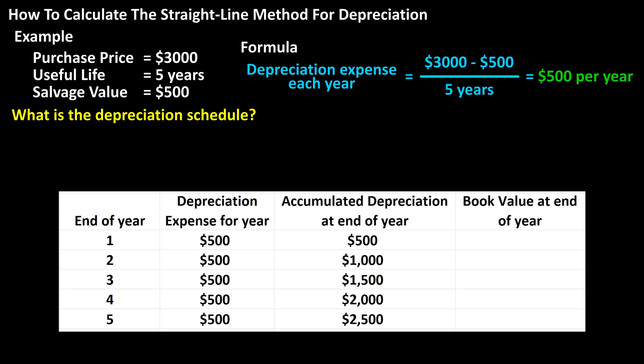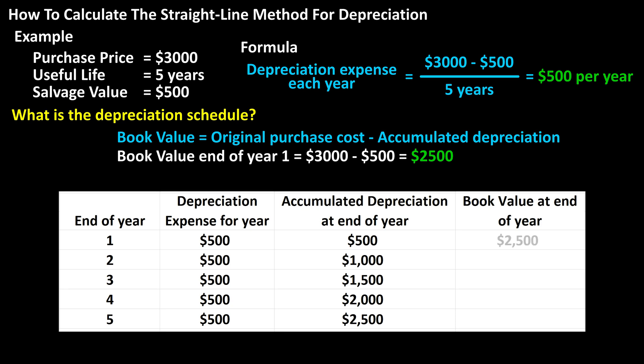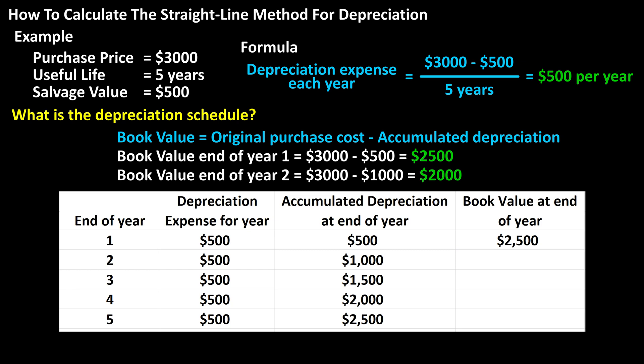Now for the last column, the book value at end of year. This is the original cost of the asset minus the accumulated depreciation at the end of the year. So the book value at the end of year 1 will be the original cost of $3,000 minus the accumulated depreciation at end of year 1, $500, which equals $2,500. At the end of year 2, we have $3,000 minus the accumulated depreciation at end of year 2, $1,000, which equals $2,000.